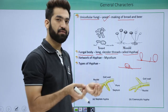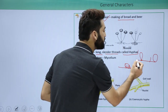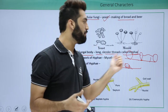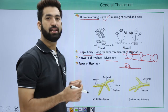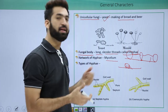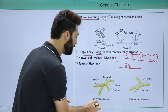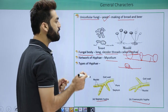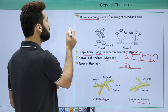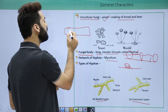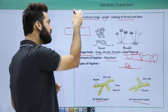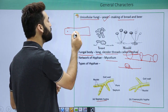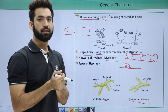As hyphae form from germinating spores, they cross-link with each other. When hyphae cross-link and become multicellular, this network is called mycelium. In aseptic mycelium — also called coenocytic hypha — there are no septa between the hyphae, so the structure contains many nuclei and is multinucleated.